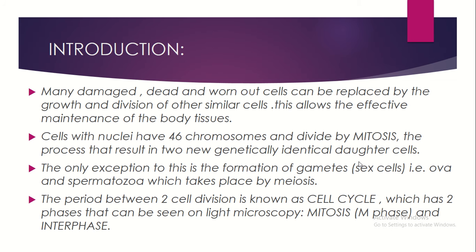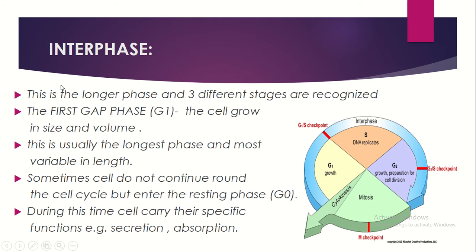Let's look at interphase. In the complete cell cycle diagram, interphase is shown in blue and contains three phases: G1, S, and G2. In the M phase there is mitosis and cytokinesis. G1 is growth in size and volume; S is DNA replication; and G2 is further growth and preparation for cell division.